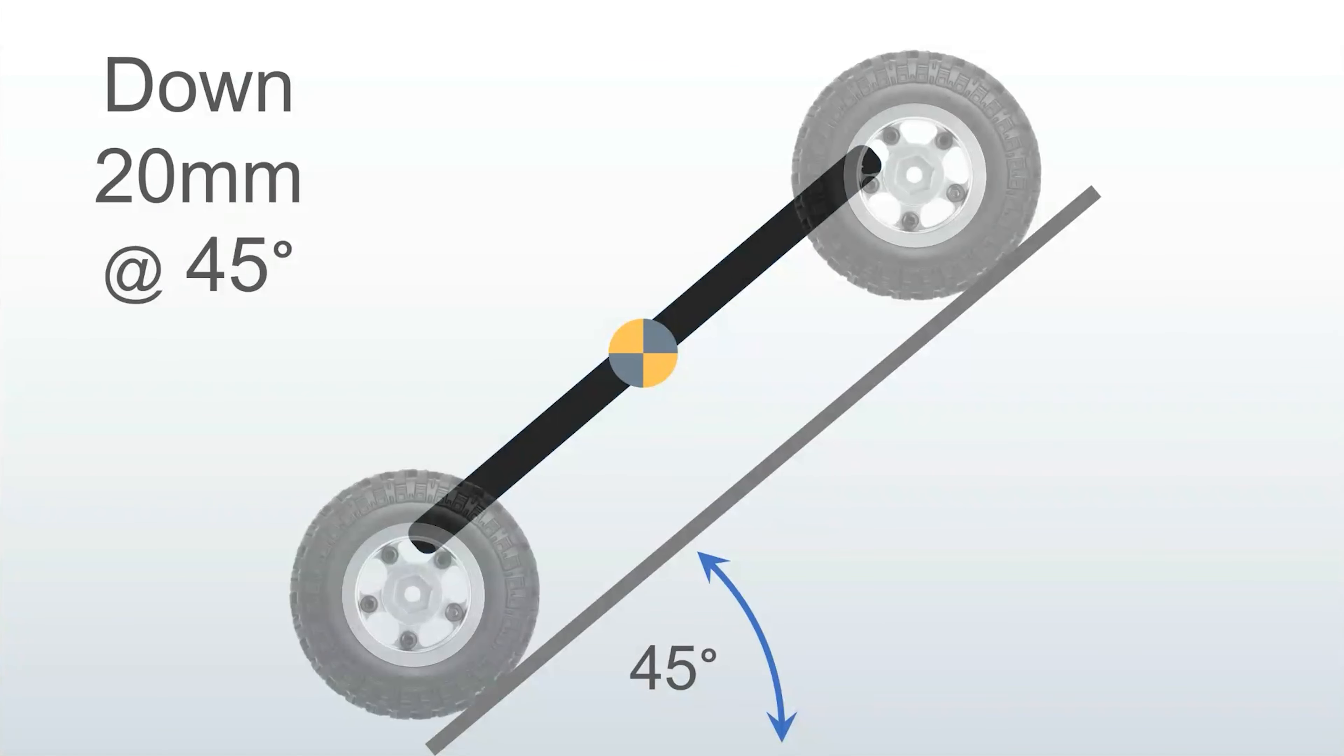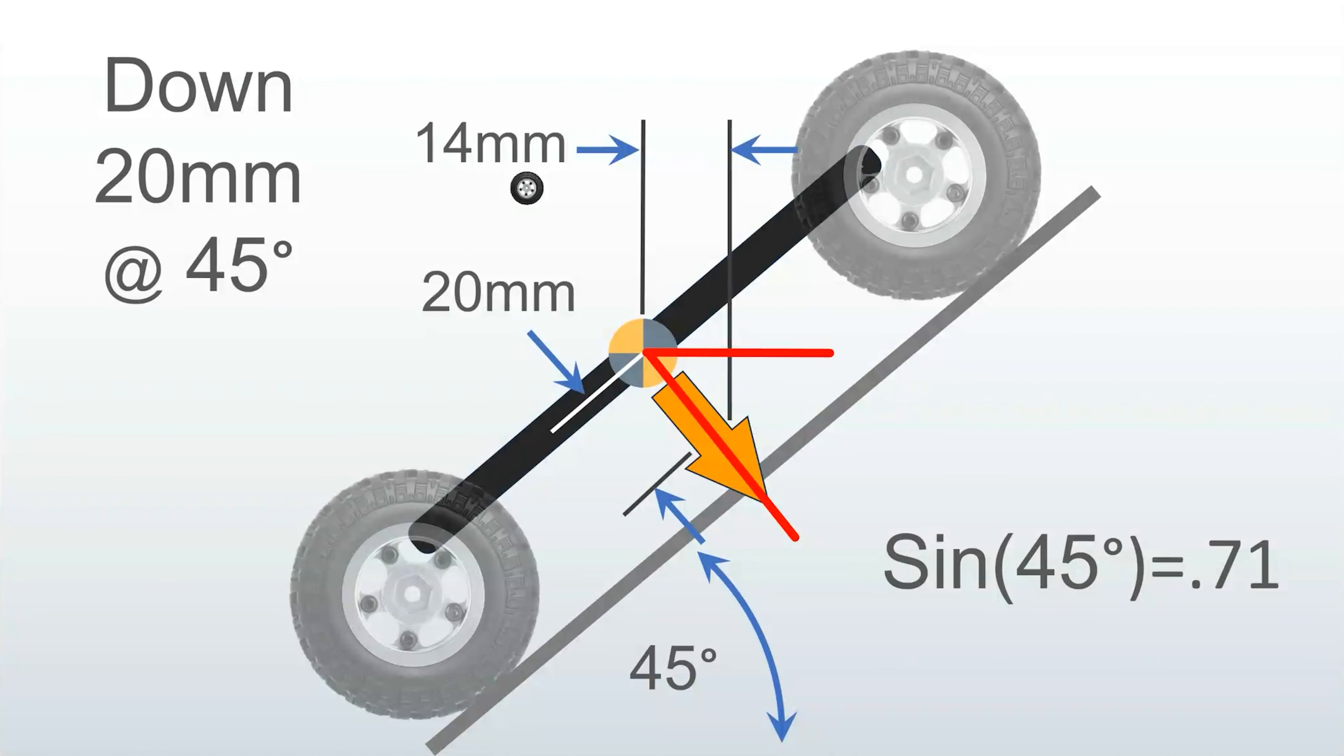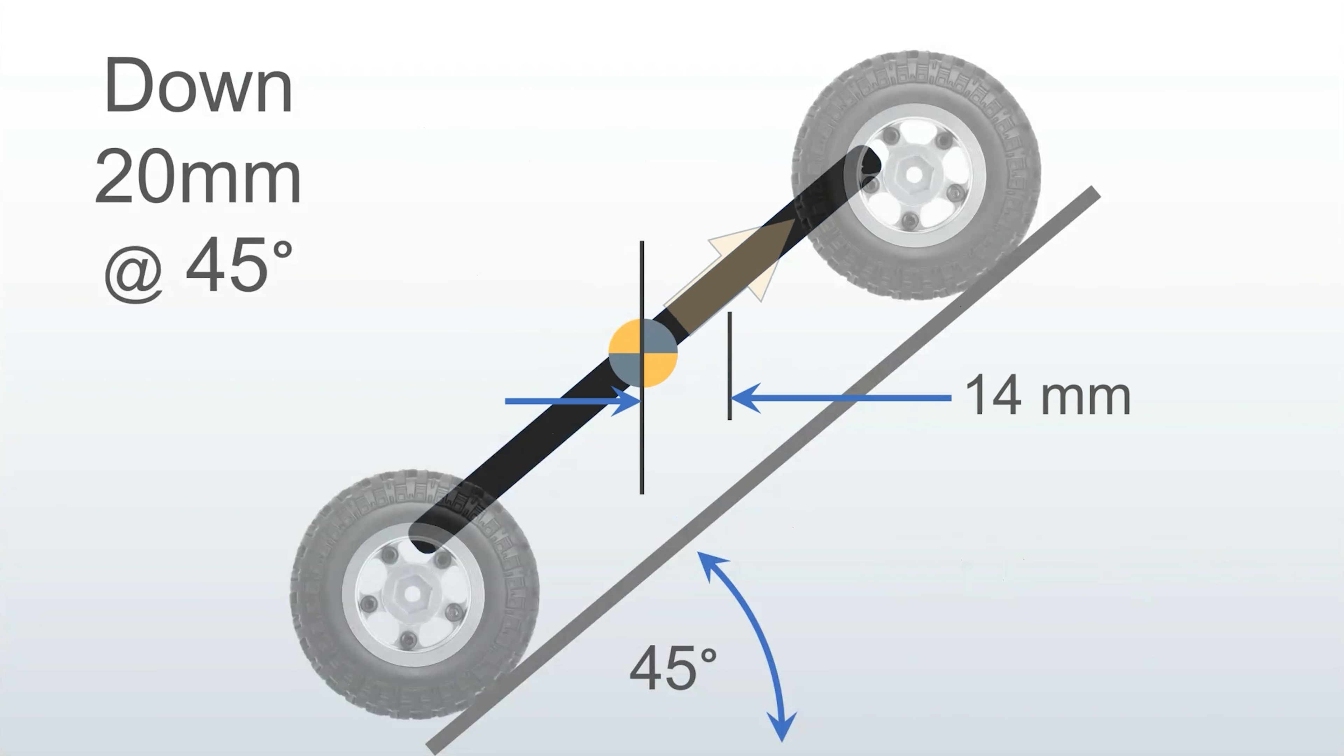Now let's compare with moving the weight down. Since it's 45 degrees, use the same triangle, cosine, or sine formula. At 45 degrees, they are the same answer. And you get the same 14 millimeter effective weight shift in the horizontal direction. So whether you move the weight forward or down, you get the same 14 millimeter benefit at 45 degrees.